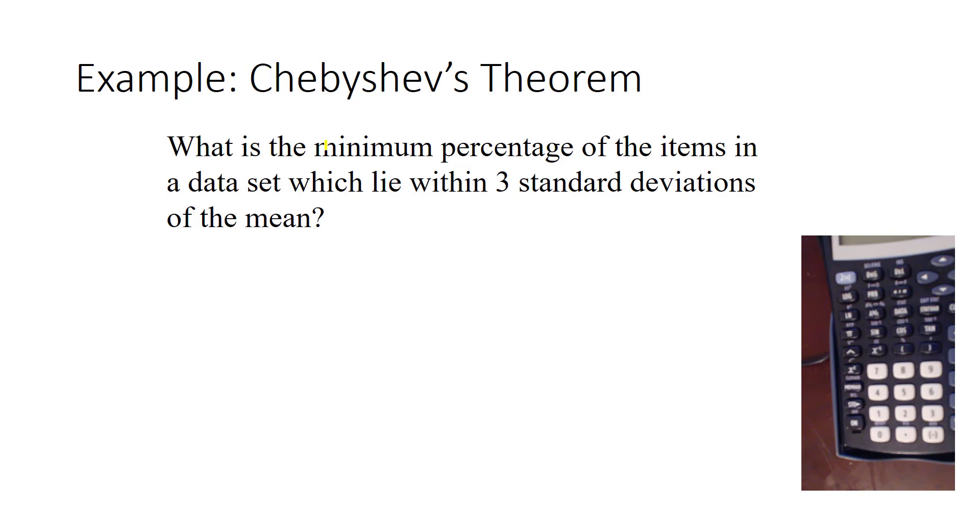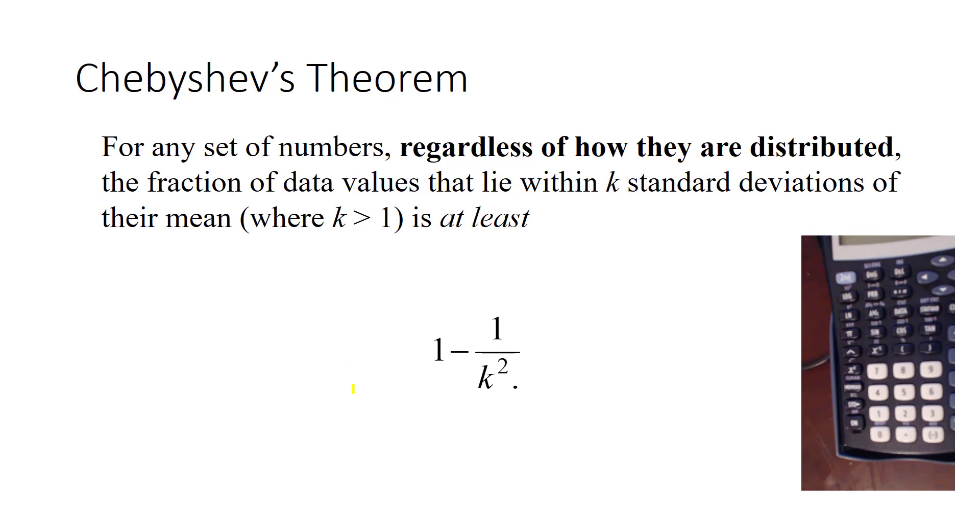It's possible that we have more, but we want to know what's the very minimum percentage or fraction of the data item that would lie within 3 standard deviations of the mean. Why is the question phrased this way? Well, that has to do with Chebyshev's theorem.